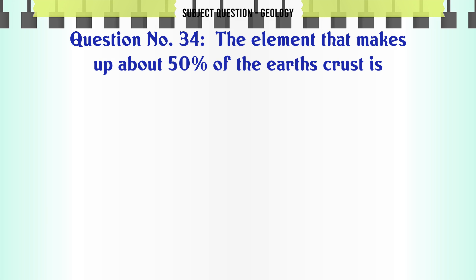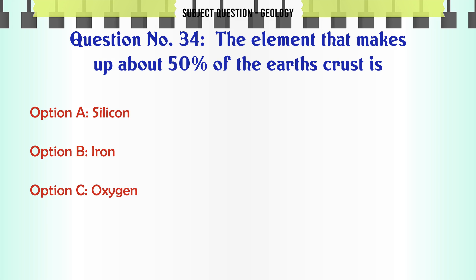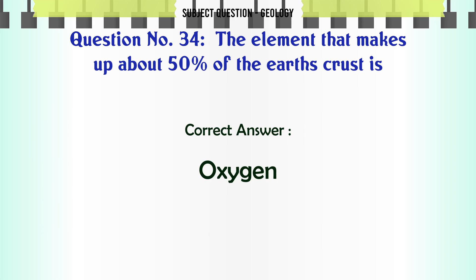The element that makes up about 50% of the earth's crust is: A. Silicon. B. Iron. C. Oxygen. D. Aluminium. The correct answer is Oxygen.